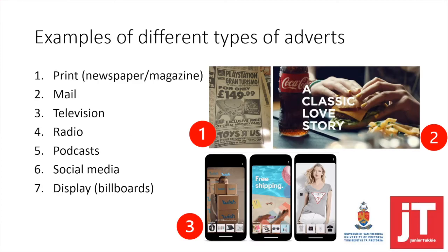Let's look at the different types of examples of adverts. Firstly, you get print adverts that you'll find in a newspaper or in a magazine. You get mail adverts — you can think of this as spam. Number three is television — those are the ads you see in between your programs or series. Number four are radio ads. Number five are podcast ads. Number six are social media ads. And seven are display ads, which you can consider the billboards.